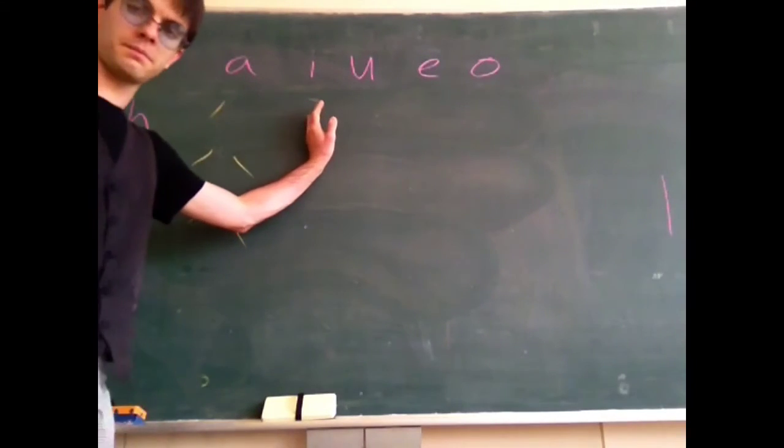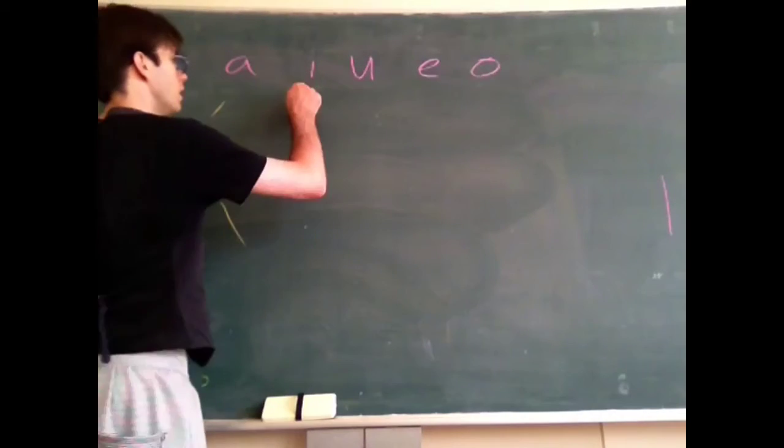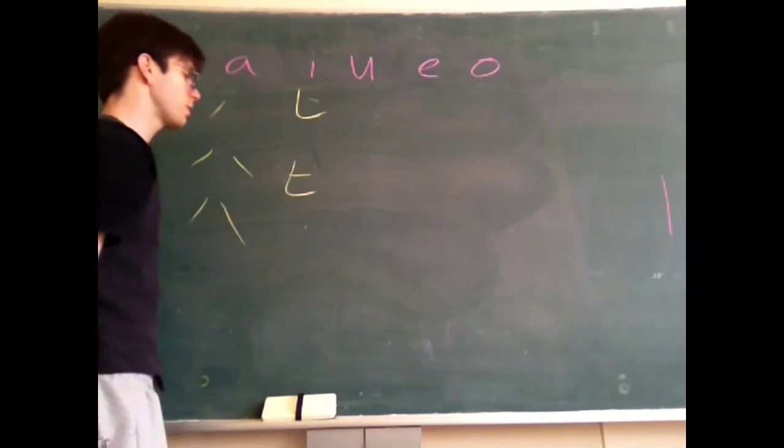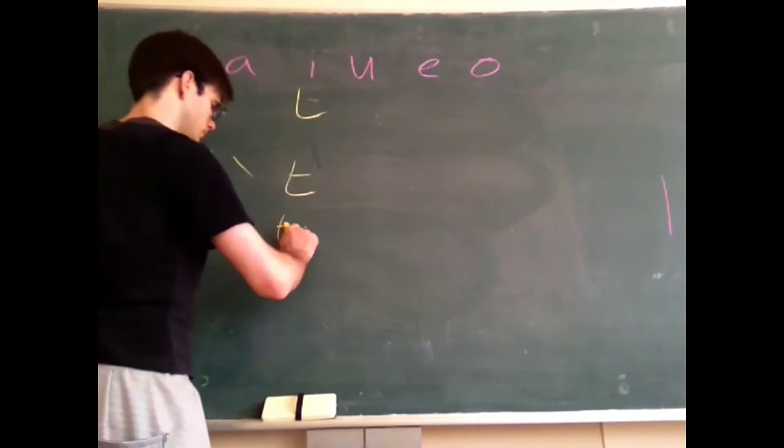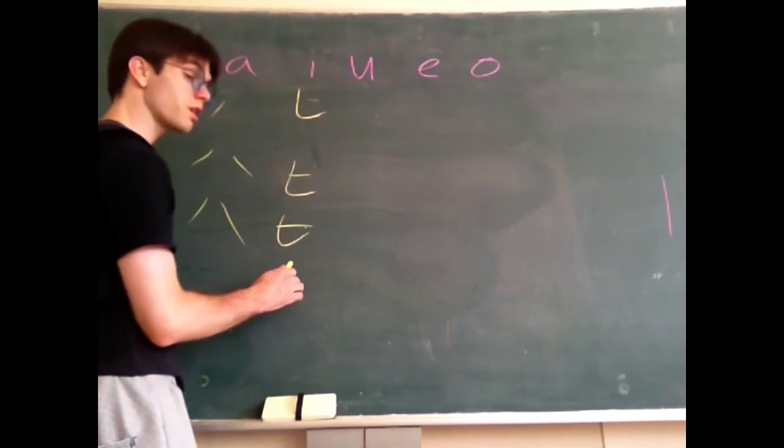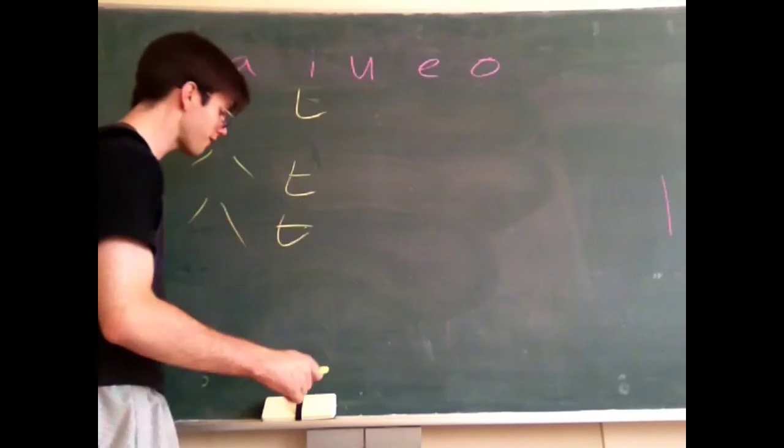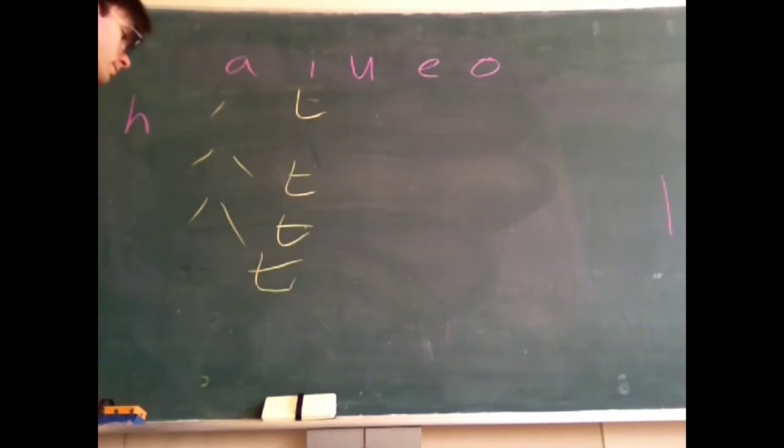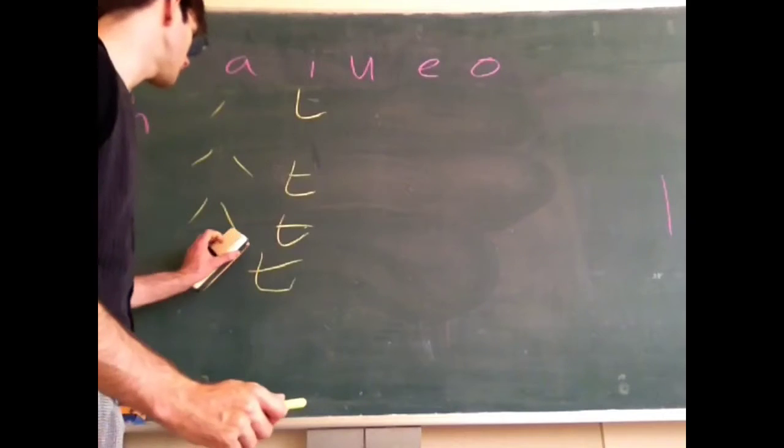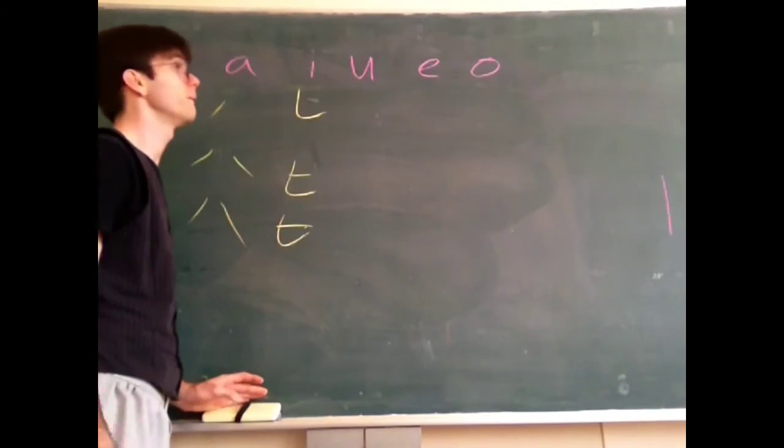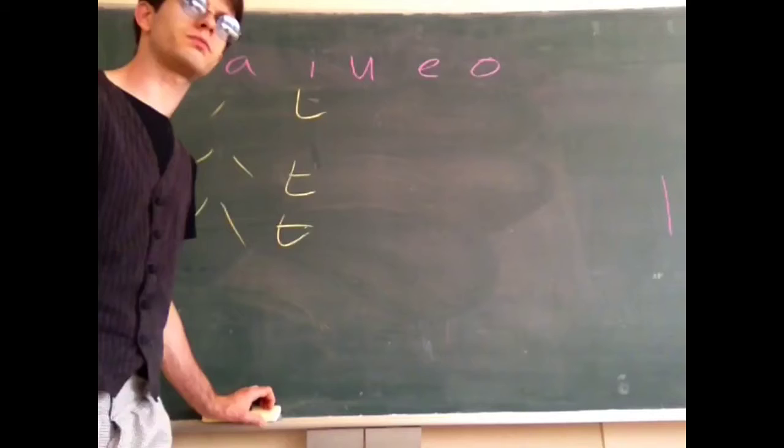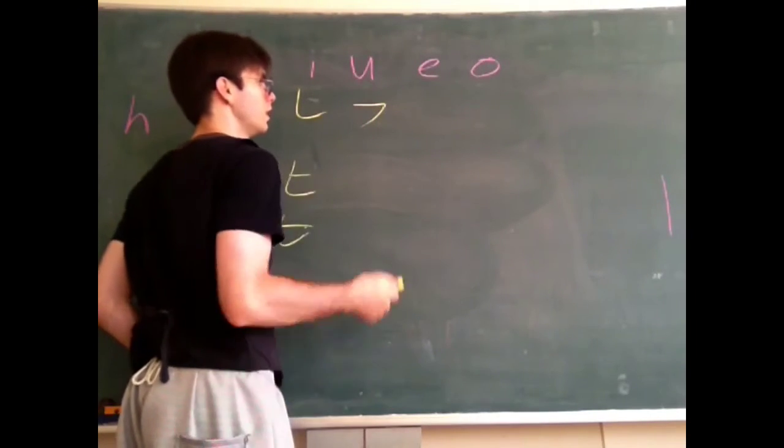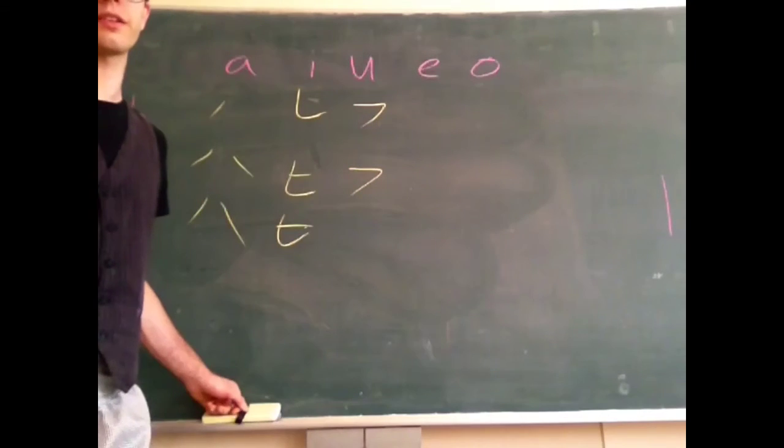Next up is hi. Hi is, well I mean, you'll see. It's like this kind of thing here and then from here stick a little thing out of it. Hi. It looks kind of like the kanji for seven, which is like that. But yeah, anyway, hi. Like this. Hi is relatively simple.